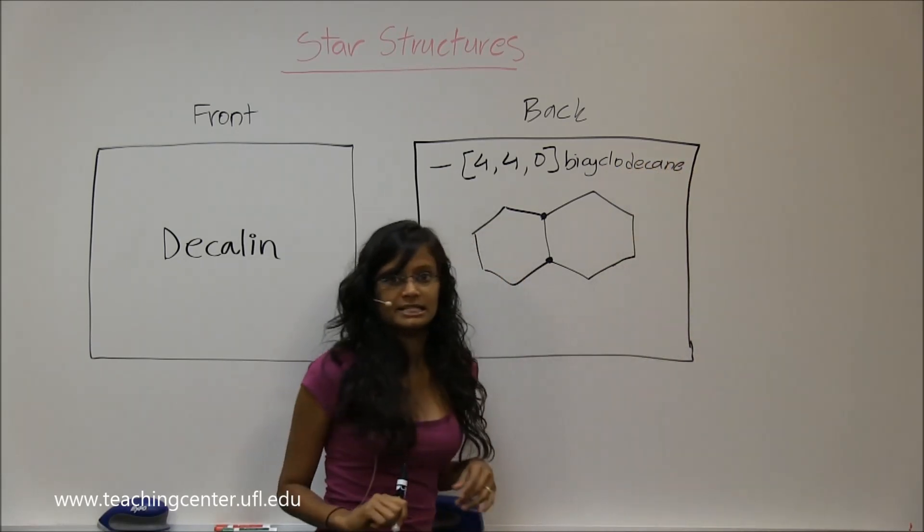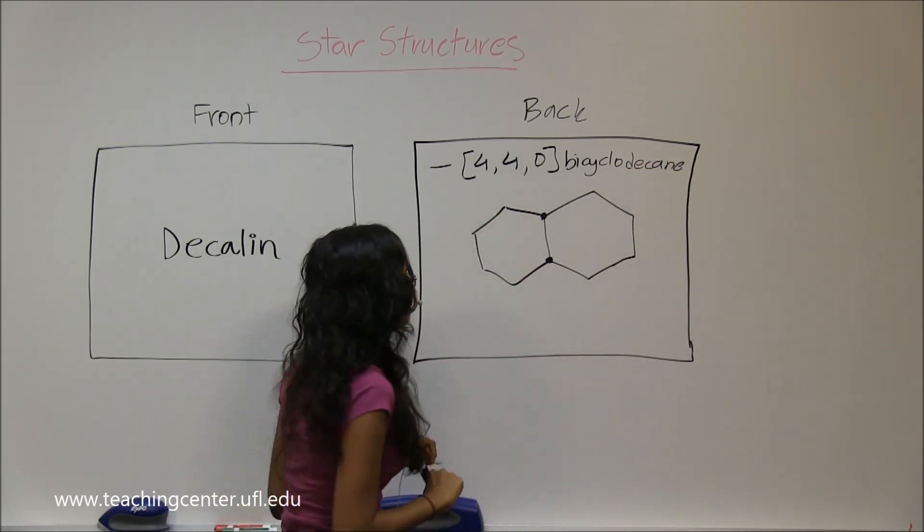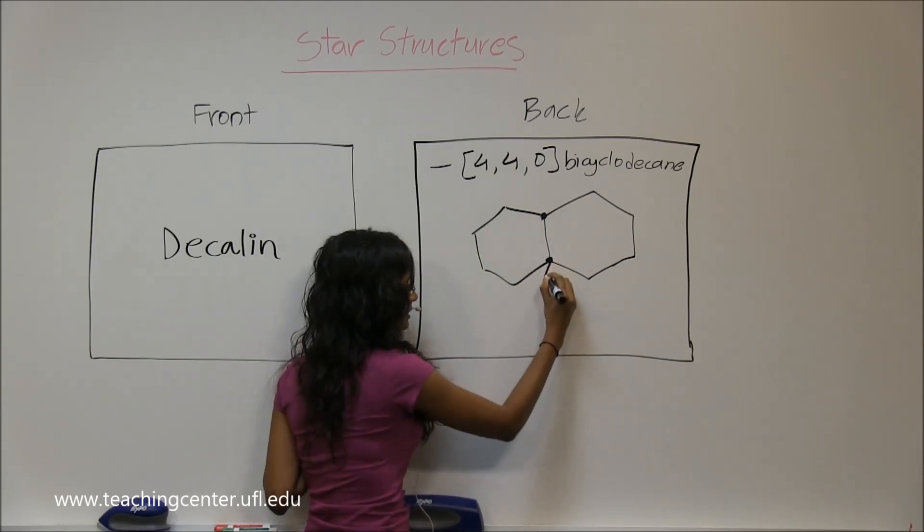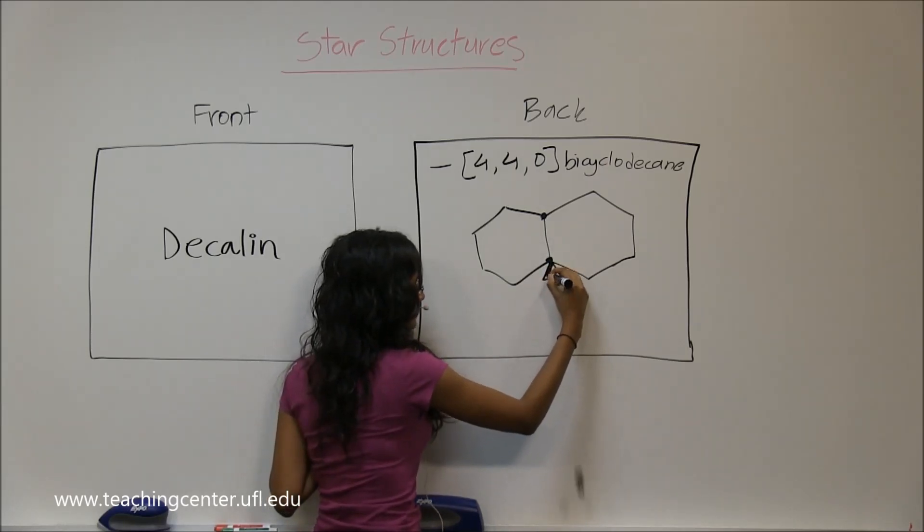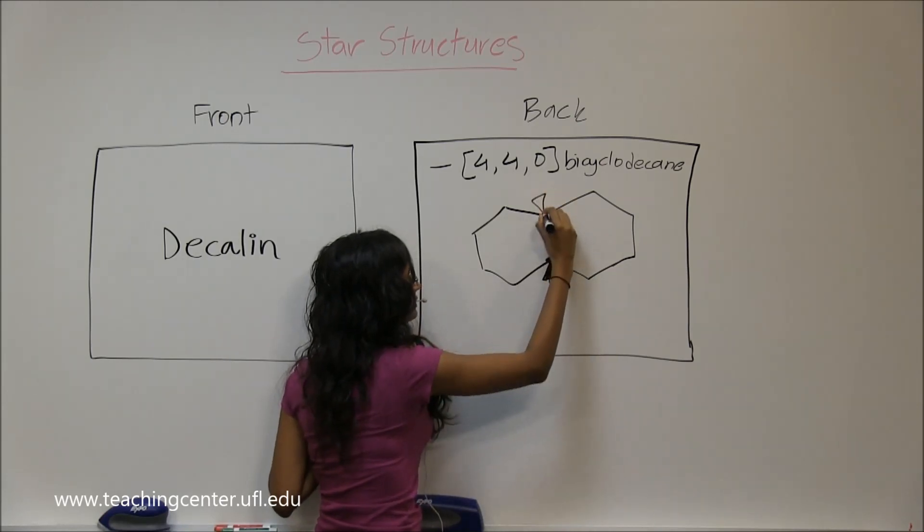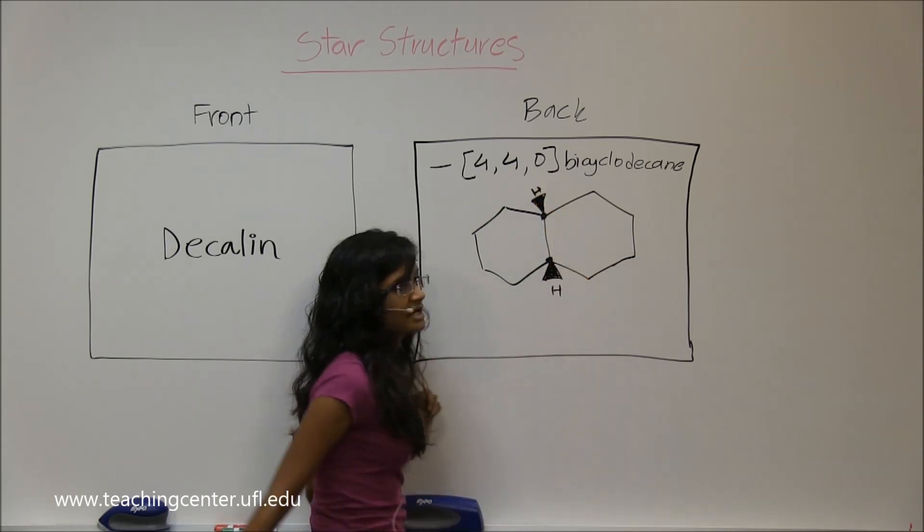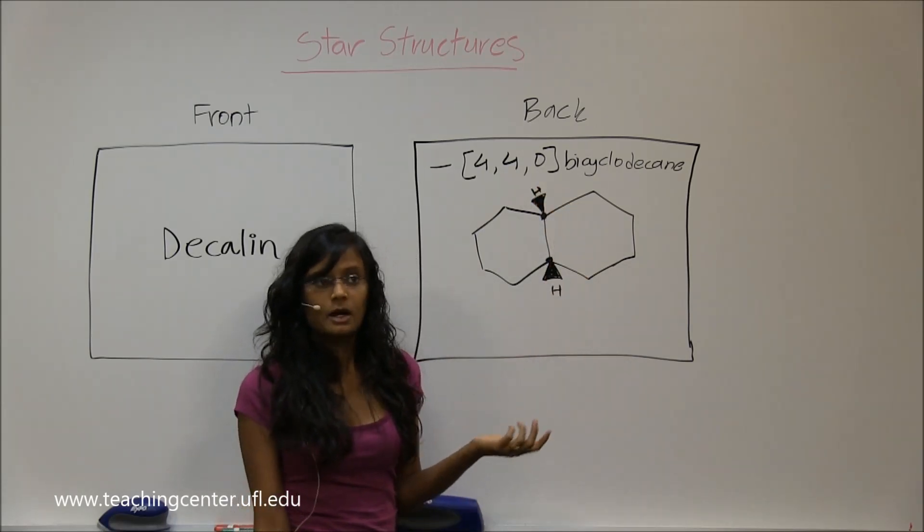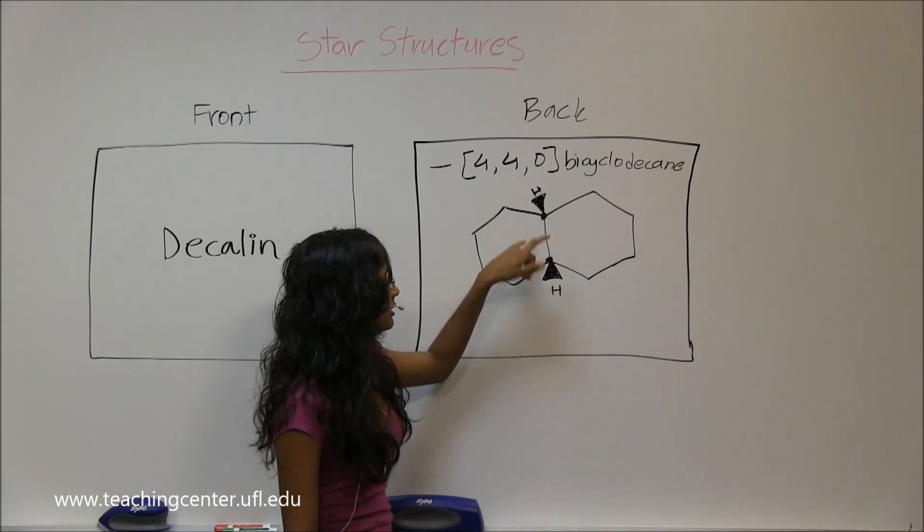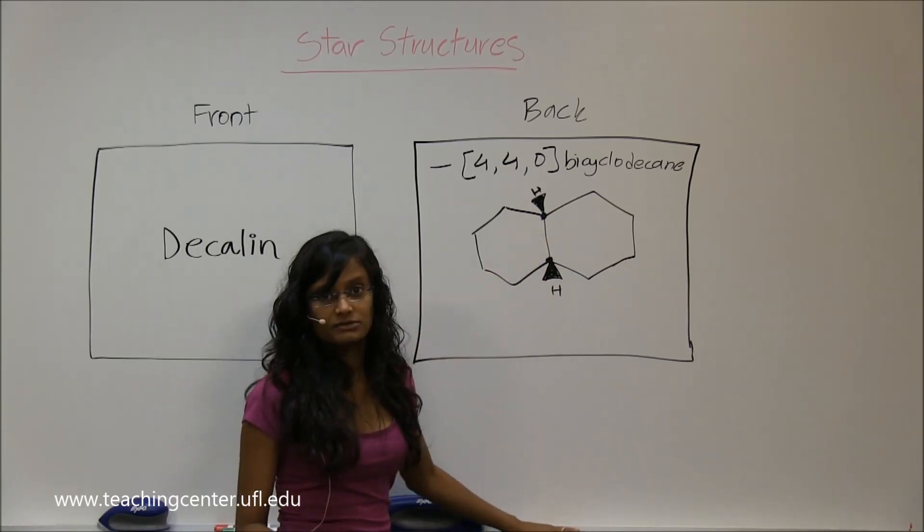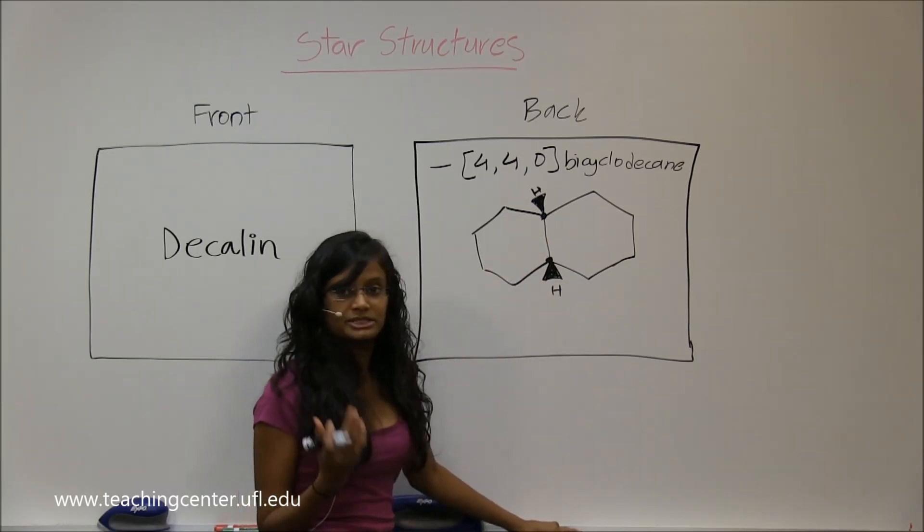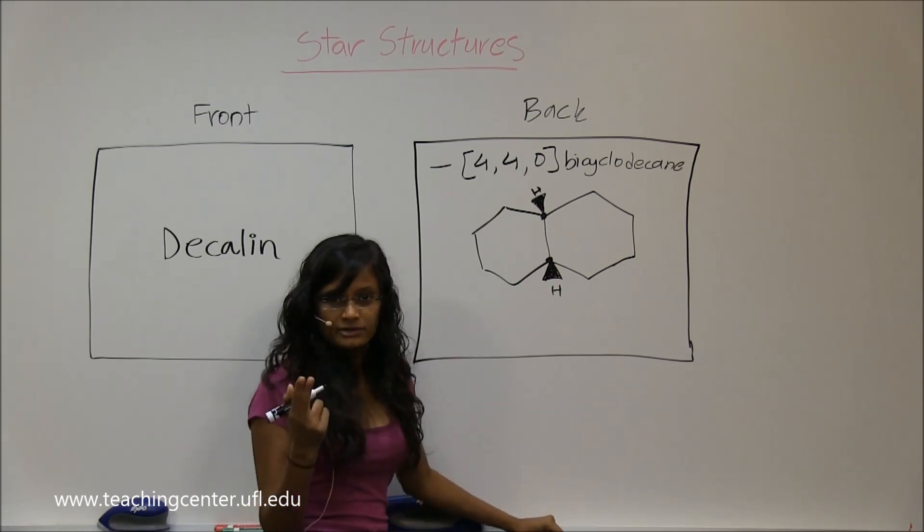The important thing about this decalin is the bridge head hydrogens. They could be both on the same side, which would make it cis, but they could be one wedge and one dash, so that would be trans. You have two different isomers for that.